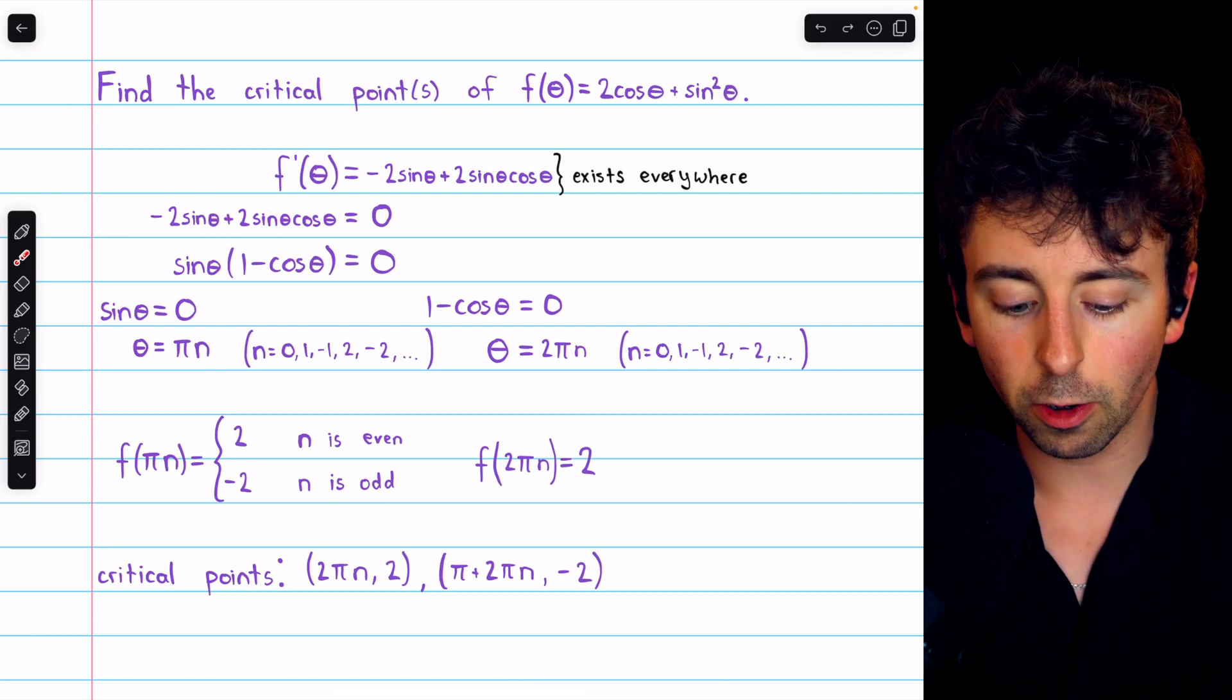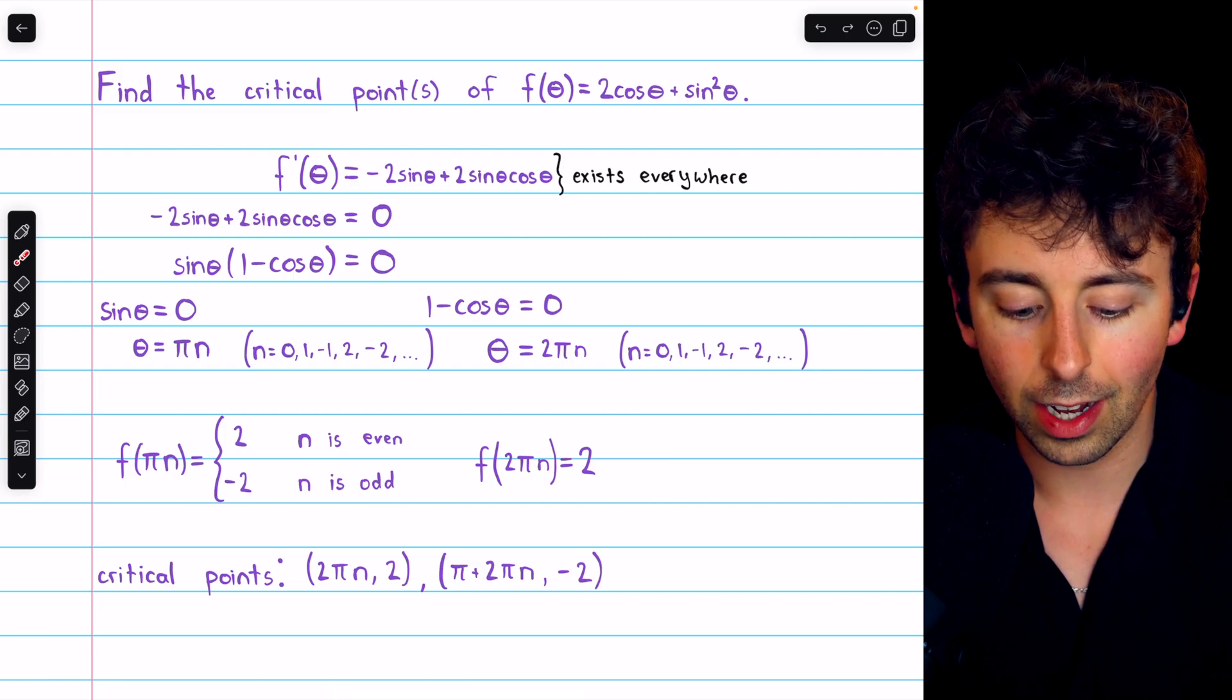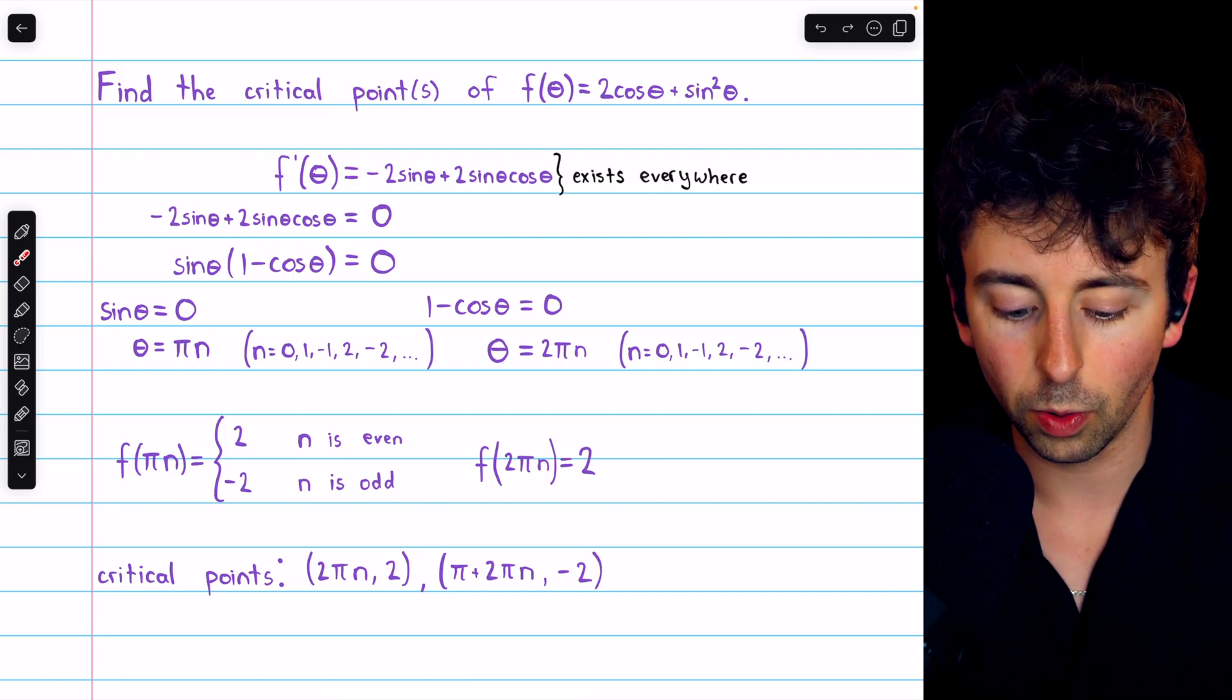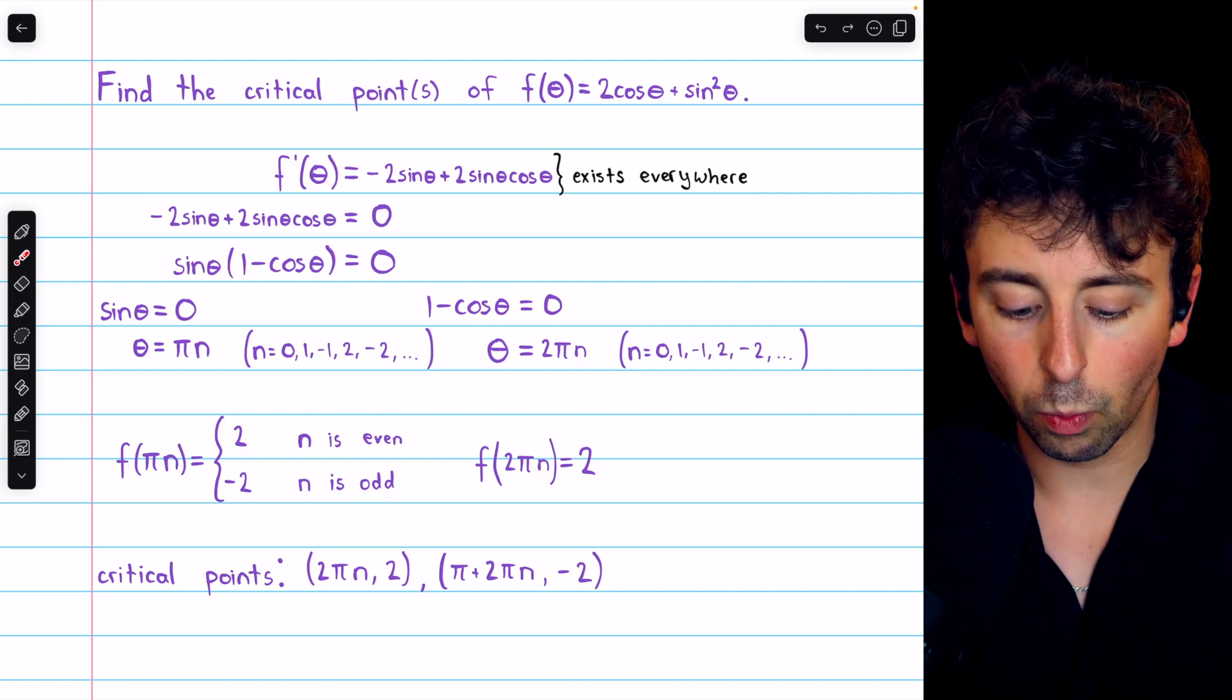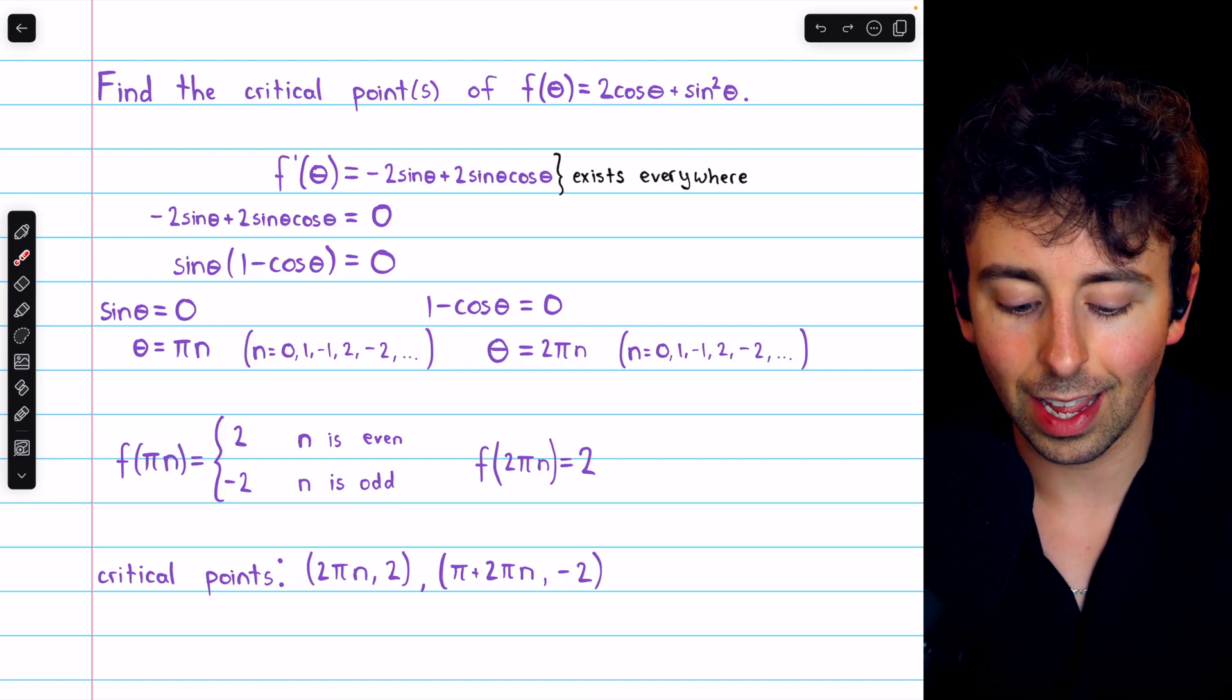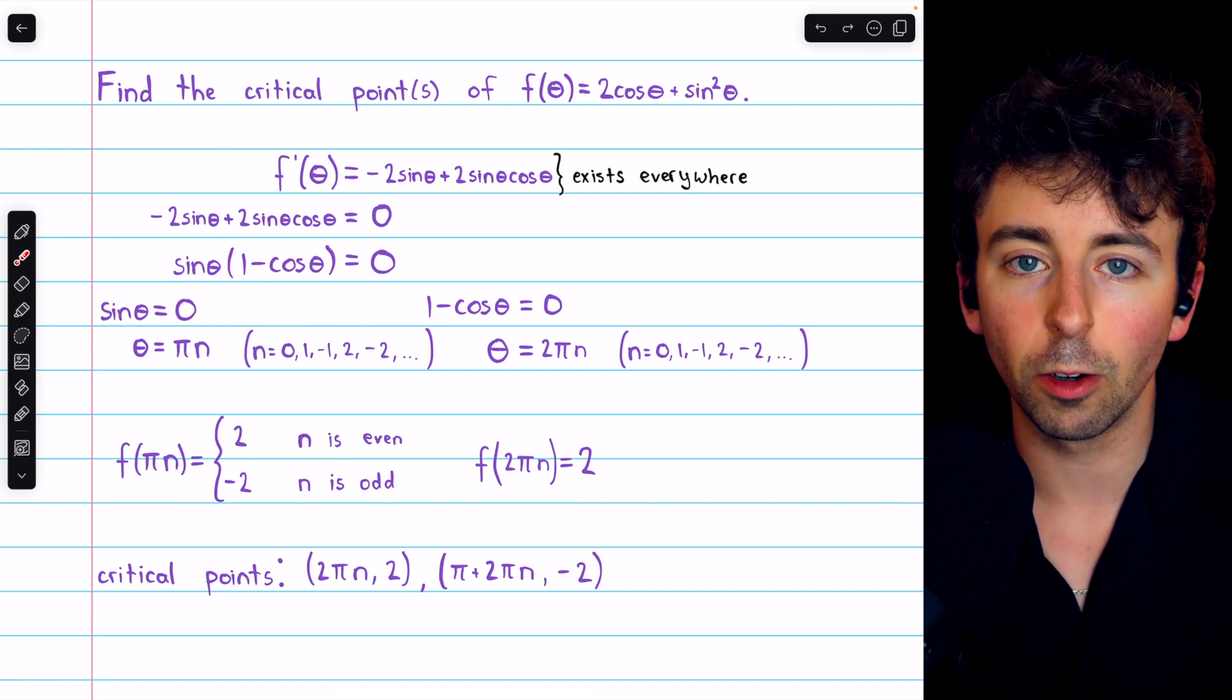So we set it equal to 0, and then factor out a sine. We can also divide everything by negative 2. Thus, we end up with sin(θ) multiplied by (1 - cos(θ)), and then we set these two factors equal to 0.